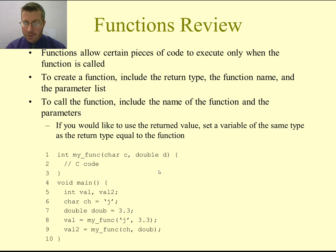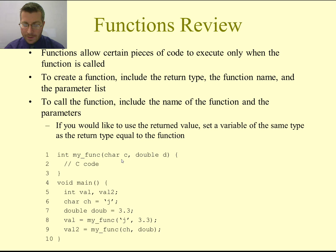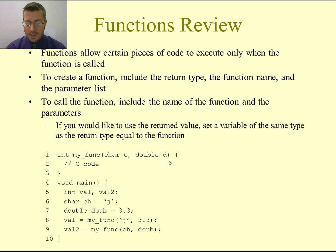When we call the function, we type the name of the function followed by what variables we would like to pass in. On line 8, I'm calling the function myfunc. The first parameter I'm passing in is the character j. The second parameter is the number 3.3. When this function gets called, this variable c on line 1, as the first parameter, will get the character j. The second variable d will get the value 3.3.